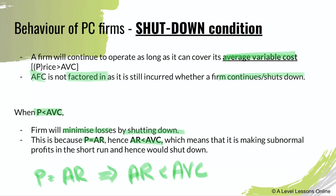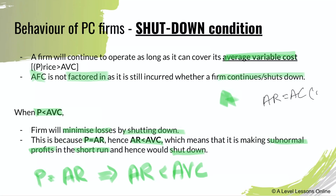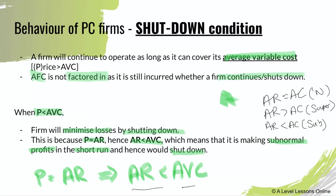When AR is less than AVC, the firm is making sub-normal profits in the short run and should shut down. To recap profit types: when AR equals AC, that's normal profits; when AR is greater than AC, that's super-normal profits; and when AR is less than AC, that's sub-normal profits. In the shutdown case, AR is less than AVC, which is a form of sub-normal profits.